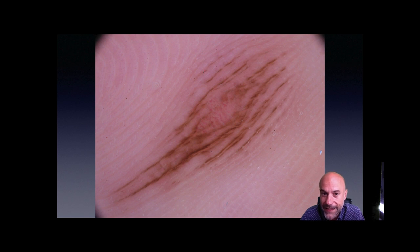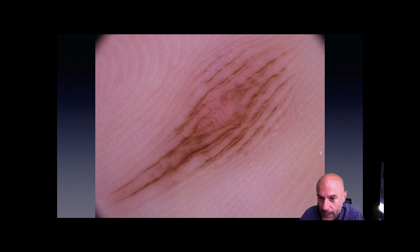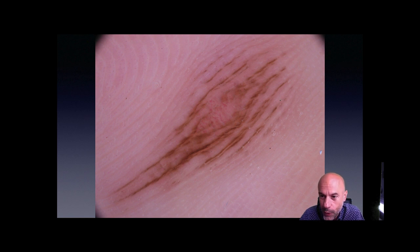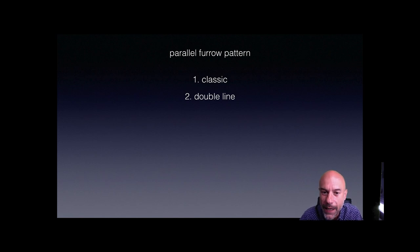In the next example, we can see again a pattern of parallel lines. In the upper part, the pigmentation is located on the furrows and the ridges are free of pigment — I can also see the eccrine duct openings. But in the central part of the lesion, on each furrow there is not just one line but two lines — two parallel, very close pigmented lines. The ridge remains free of pigment, but on the furrow we see double lines. This is the so-called double line pattern, which is a variation of the parallel furrow pattern.